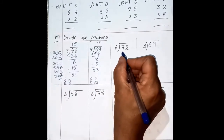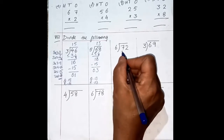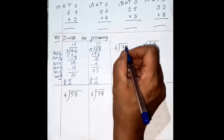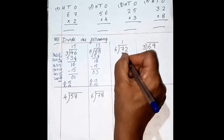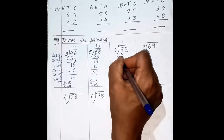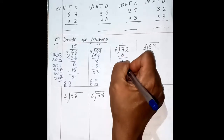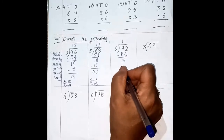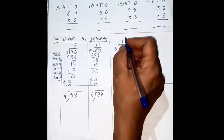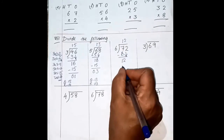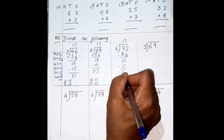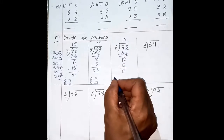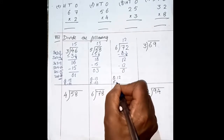Understood? Look at the next one. 7 is again greater than 6, so we are just taking one number. 6 ones are 6, 6 twos are 12 — we cannot take 12. So we are taking one time: 6 ones are 6. Now 7 minus 6 is 1. Your next number is 2, so this is 12 now. 6 twos are 12 — it is going 2 times. The remainder is 0: 12 minus 12 is 0. Your quotient is 12 and the remainder is 0.